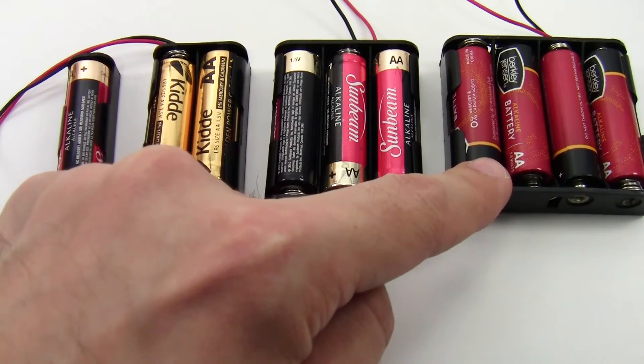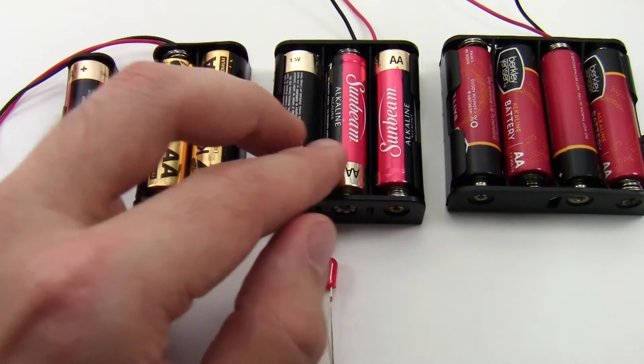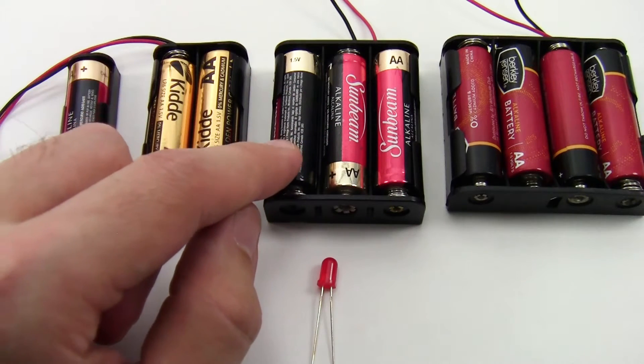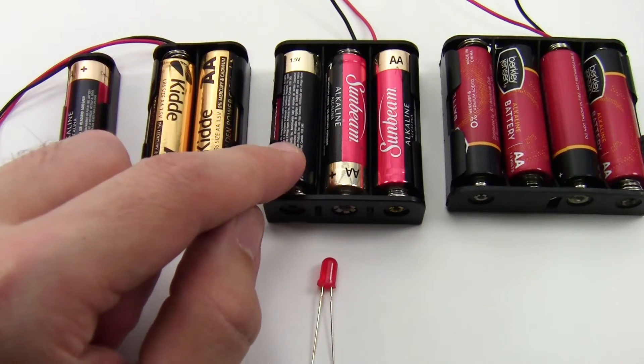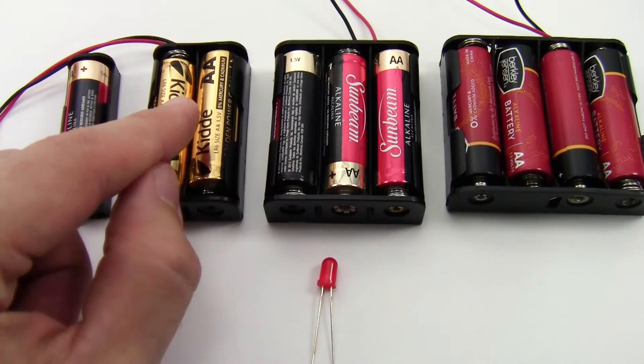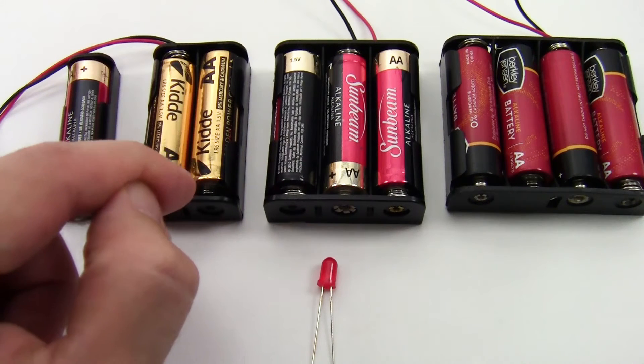4.5 volts or 6 volts will still work, but these voltages are actually higher than I need, and they're going to be wasting power by burning extra voltage off in my current limiting resistor. So the 2 by AA battery pack would be optimal here.